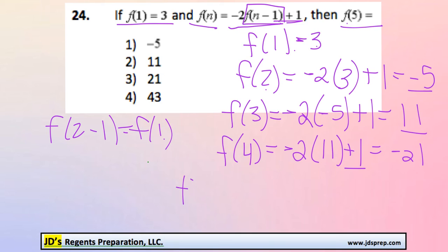And now we're finally ready to figure out what f(5) is. We'll do -2 times the previous term, which is -21 plus 1. And that would become, sorry, positive 42. And 42 plus 1 is 43.